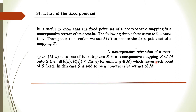Once again, what do we mean by non-expansive retraction? We are given a metric space and any subspace S of this metric space. We are given a mapping going from M to S which is non-expansive, satisfying the distance condition. If this mapping leaves each point of set S fixed — meaning R(x) = x for every x in S — then we say R is a non-expansive retraction and S is a non-expansive retract of M.